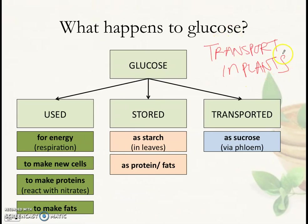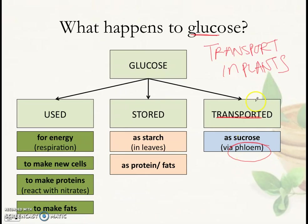In this video we're going to be moving on to the next chapter: transport in plants. In this chapter we're going to be looking at how substances are transported in plants. This is already related to what we looked at in our last lesson, where we talked about glucose and what happens to the glucose that is made in leaves. One of the things that happens to glucose is that it is transported as sucrose inside the phloem.